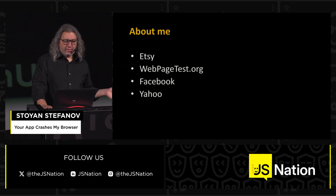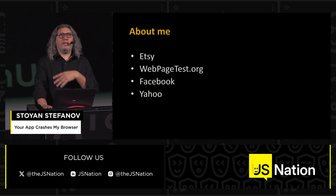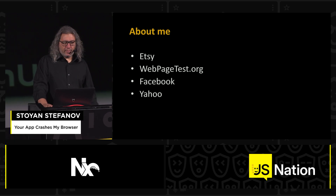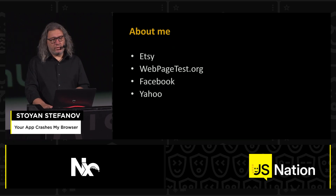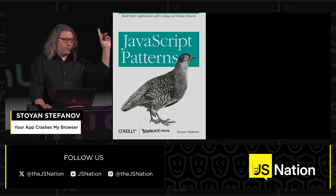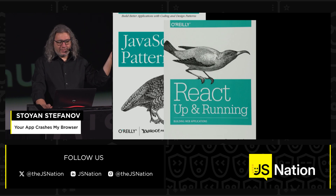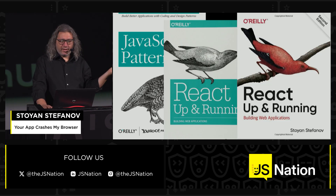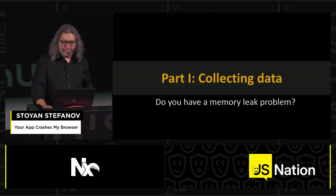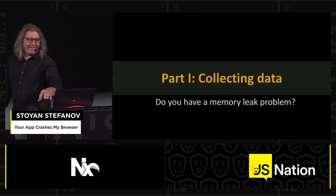About me: I'm currently at Etsy, working on WebPageTest — a darling of the web performance community. I spent a bit of time at Facebook and Yahoo before that, mostly doing web performance and front-end optimizations. I wrote a bunch of books. This is my bestseller — I don't suggest you buy it, it's very old. I also wrote maybe one of the first React books, even a second edition. Please don't — it's already so out of date.